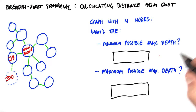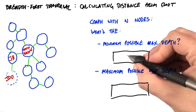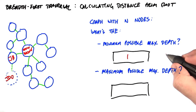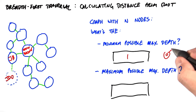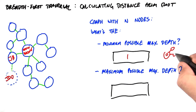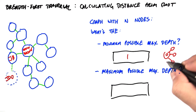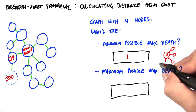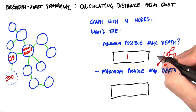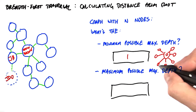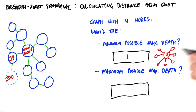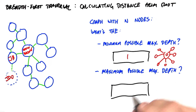So the minimum possible maximum depth is 1. If we start with a node here that we're going to number 0, and then we have a graph where every single node is attached to that root node, the depth of each one of these is going to be 1.